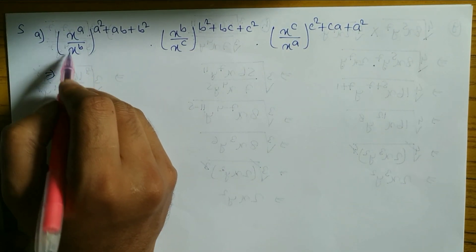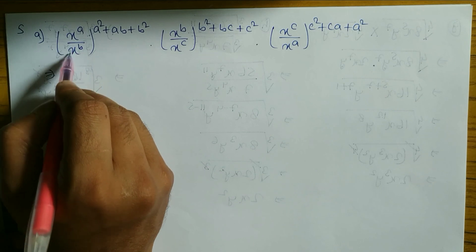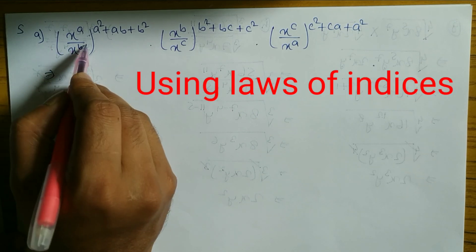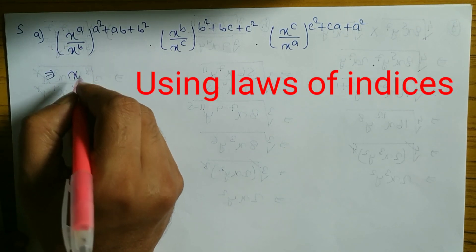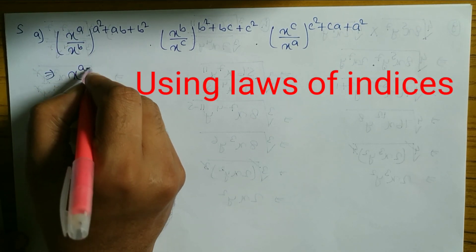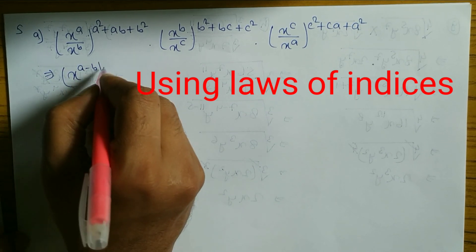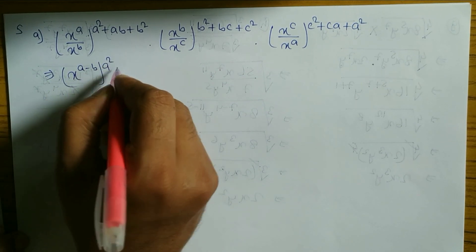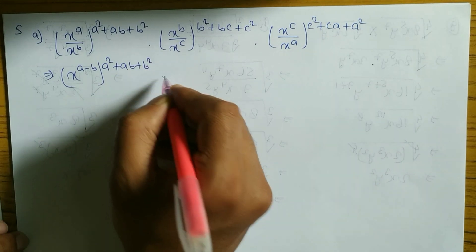We have to use the law of indices — base same. Base means x. Base same, and in division we have to subtract the power. So we have to write here a minus b, times a squared plus ab plus b squared.